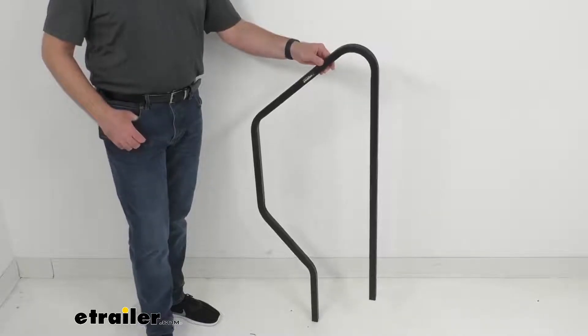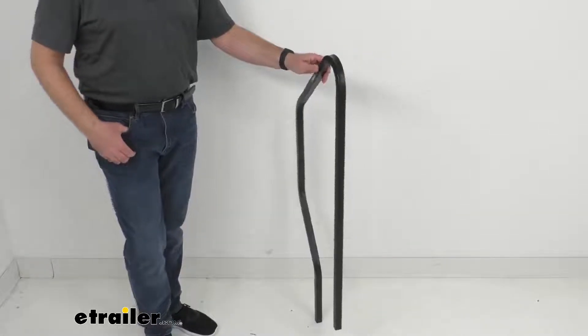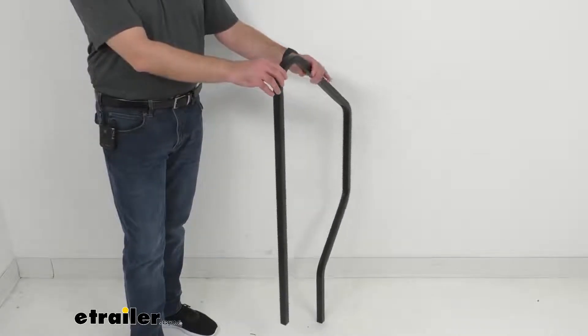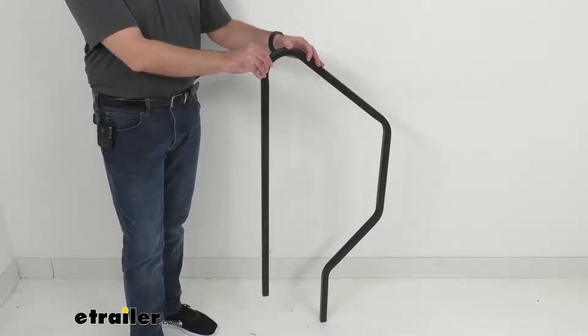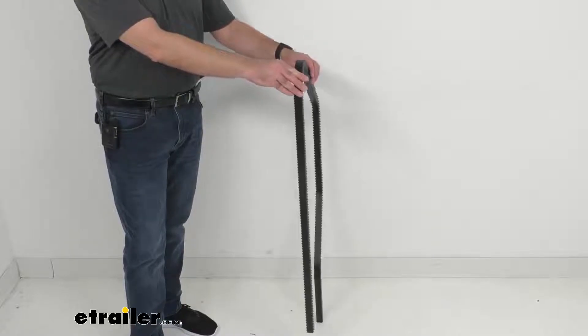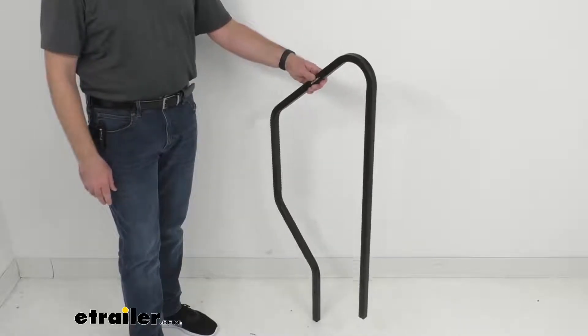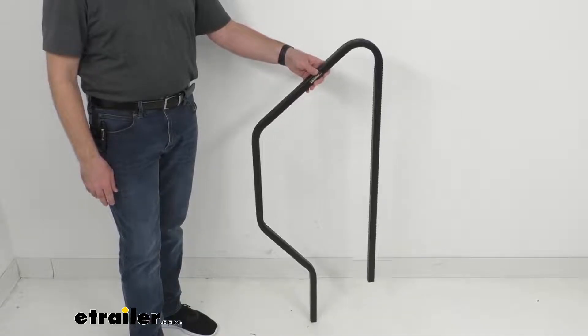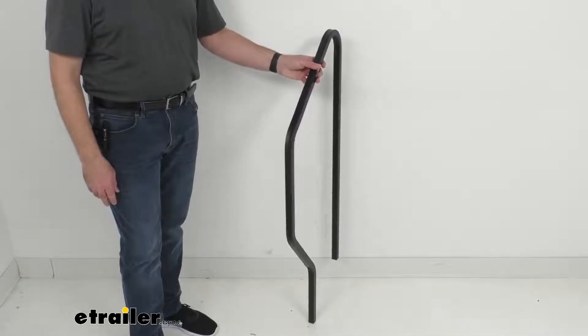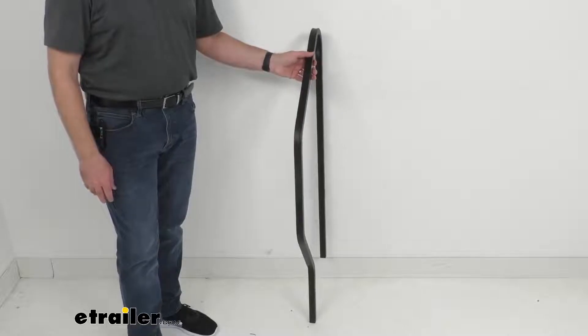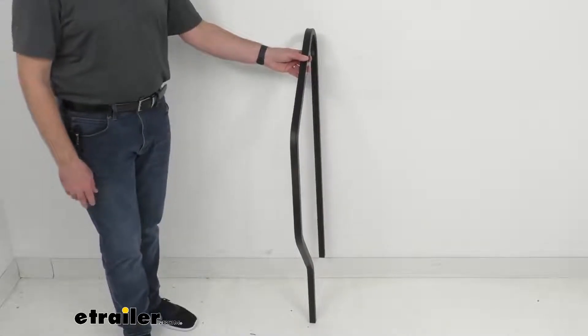Now if you are not sure if you have the first or second generation, an easy way to tell is that the first generation uses a removable pin to adjust and lock the legs in place. And the second generation steps have a button that releases the legs for adjustments. So if you have the button, this handrail is going to work for your steps.